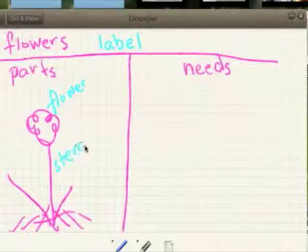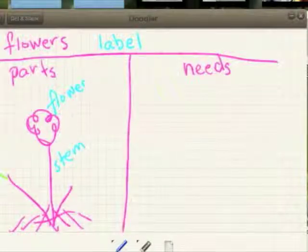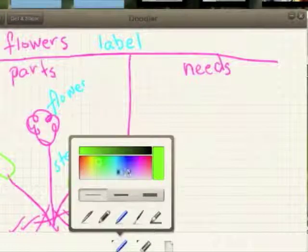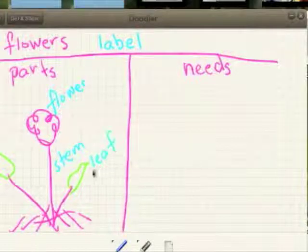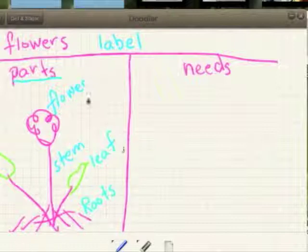This is the stem. I really do need a leaf, don't I? Let's put a leaf here and a leaf here. And I'll go back here and get a blue. And then I'm going to write leaf. L-E-A-F. That's a leaf. And these down here are roots. R-O-O-T-S. This is, these are the parts of a flower. The whole flower is the whole thing. These are the parts.